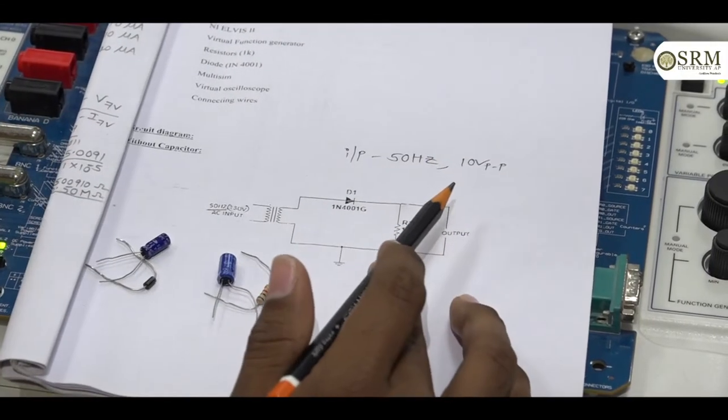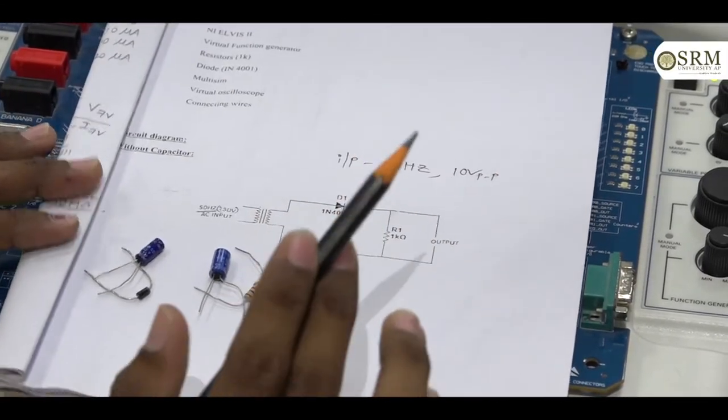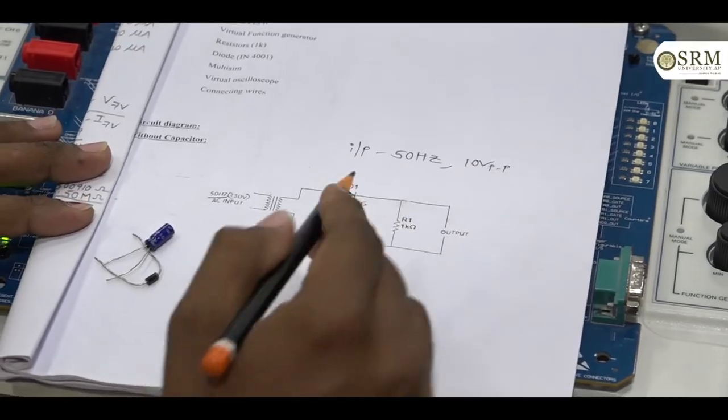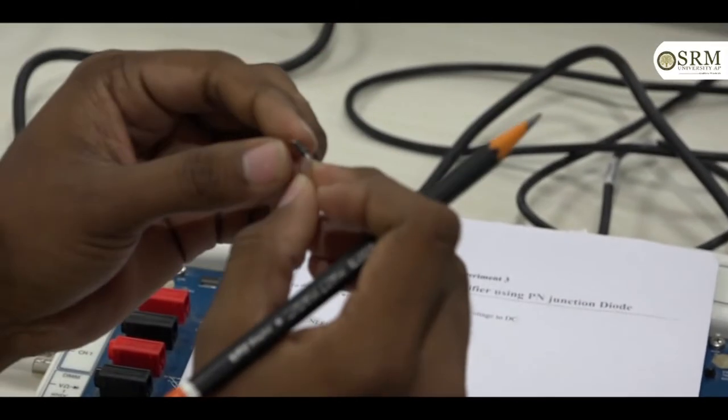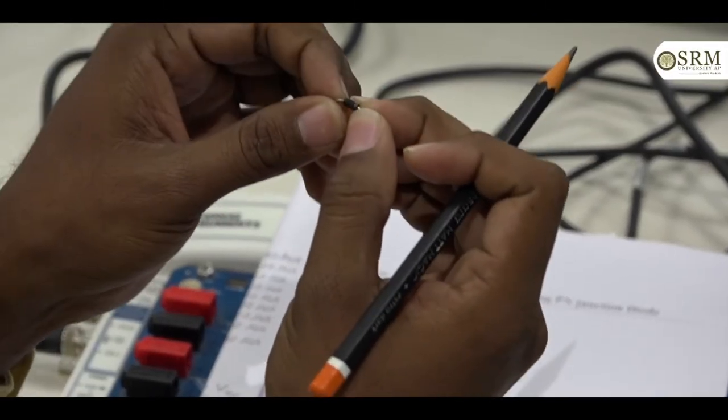Now, the experiment is half wave rectifier using PN junction diode. We know PN junction diode has two terminals. One is positive and the silver coating is the negative.